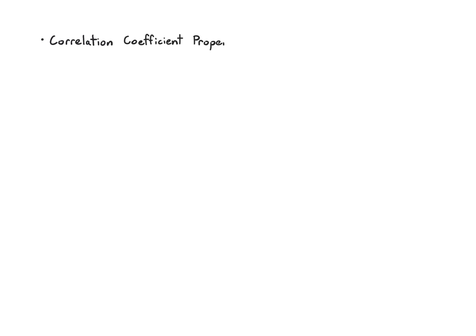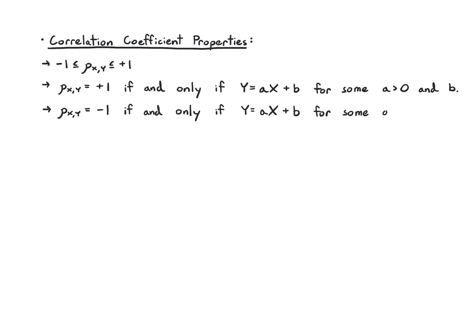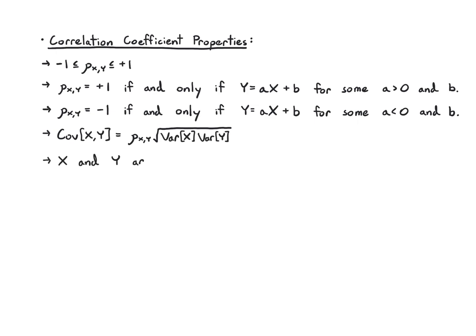Some basic properties. The most important one — which gives us scale invariance — is that rho lies between minus 1 and plus 1. It equals plus 1 if and only if y can be written as ax plus b for some positive a and any b. We can recover the covariance by multiplying rho by the square root of the product of the variances. x and y are uncorrelated — meaning covariance equals 0 — if and only if rho equals 0.